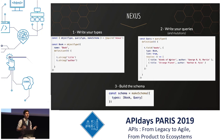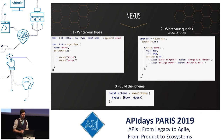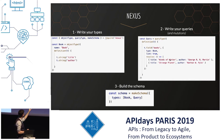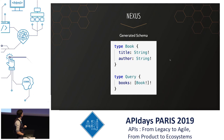And then we build the schema. This time we only give the types, including the query type, and it's going to be Nexus that generates the SDL — you are not writing it manually. It's going to be a generated artifact based on what you wrote, and it's going to be faithful to how you wrote it without typos. And this is what it's going to look like.